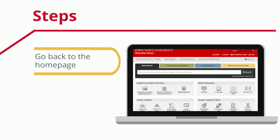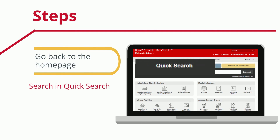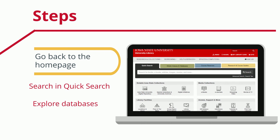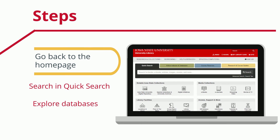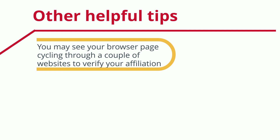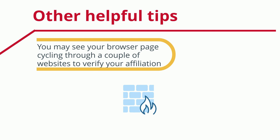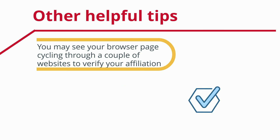Go back to the homepage. From here, you can search in Quick Search or explore databases to access library materials. When clicking on a database or resource, you may see your browser page cycling through a couple of websites to verify your account is linked to ISU. You should now be able to use the library's resources.